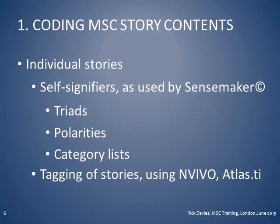There are basically three types of self-signifiers: the first method is called triads, the second is polarities, and the third are category lists. I will start by looking at the category lists, then move to the polarities, and then to the triads.